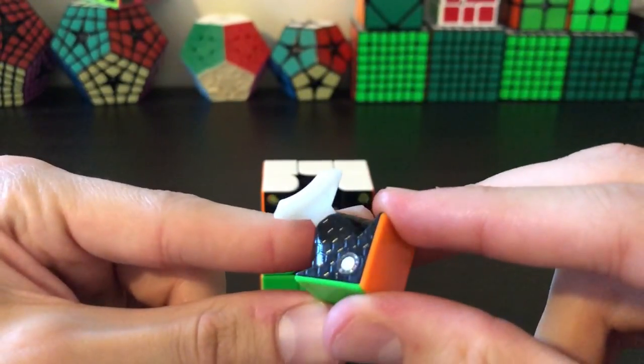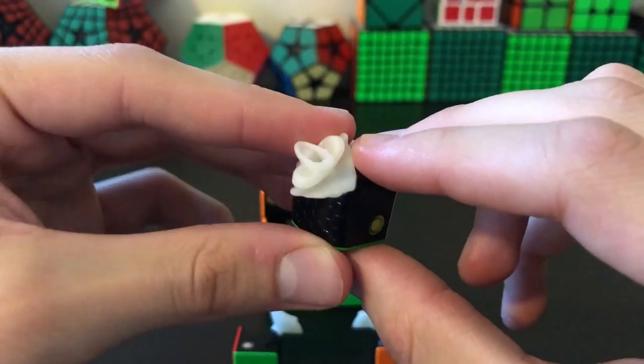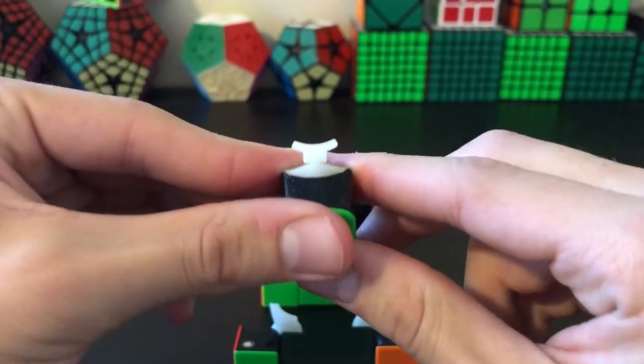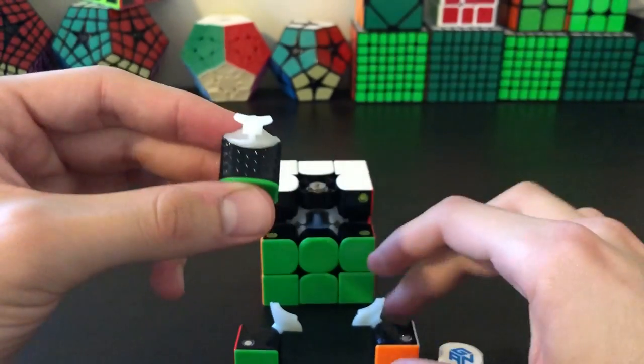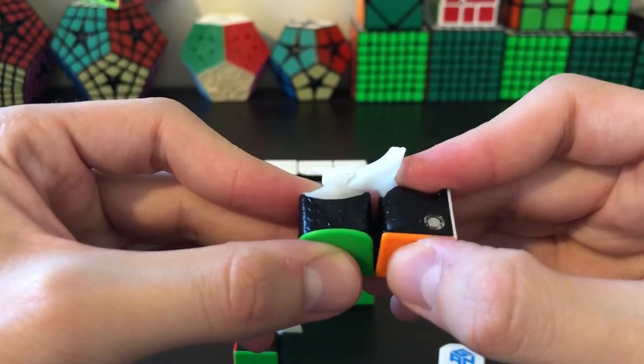And as you guys can tell, they have embedded the magnets in the actual corner and edge pieces. I think it's pretty cool that companies are actually starting to now incorporate magnets into their puzzles. I know first they started to glue them in, then they started to have little slots, but now these are actually in the pieces.